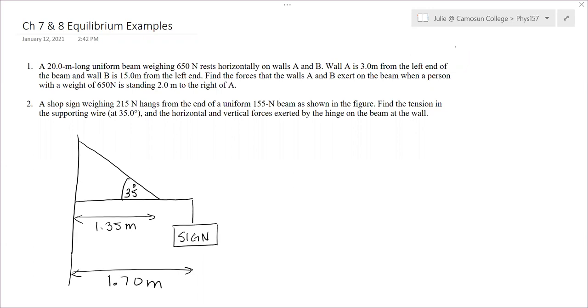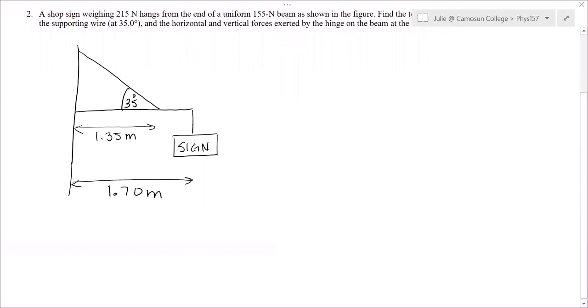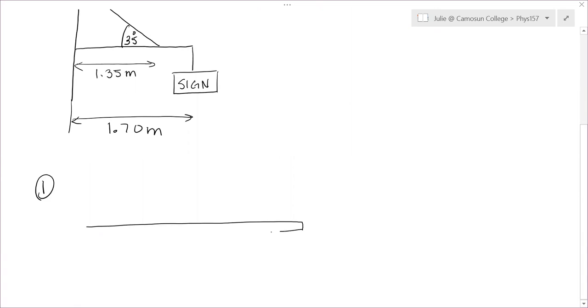This video should help with your Chapter 7 and 8 Mastering Physics assignment, which is about torques and static equilibrium. So the first question deals with a uniform beam weighing 650 Newtons at rest, supported by two walls. And we need to find the forces those walls exert on the beam.